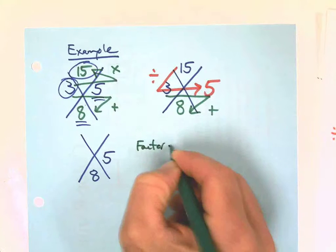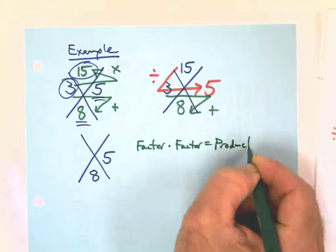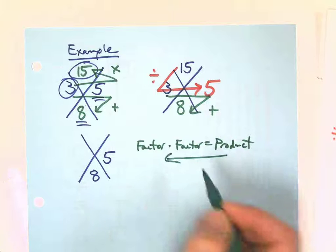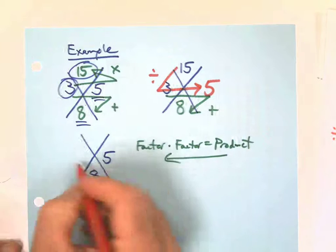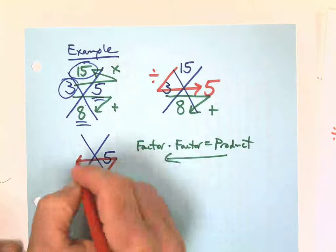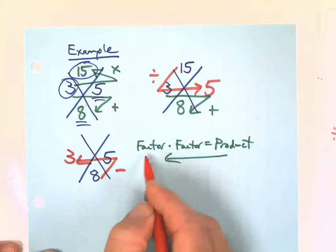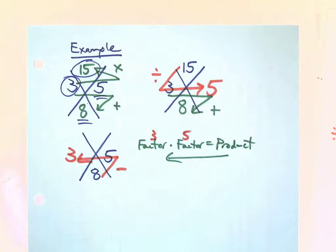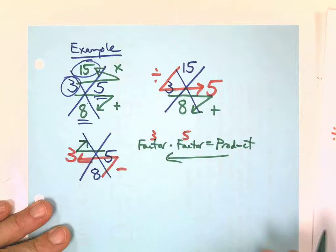Factor times factor equals product. We don't have two factors, so we got to work backwards, right? So I'm going to use red to get the other factor. I subtract, I'm undoing, I get 3. Now I have my factors, so I'm going to go green because we're going big.